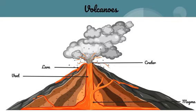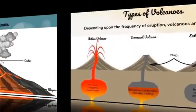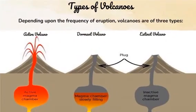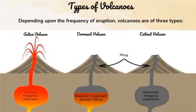Depending upon the frequency of eruption, there are three types of volcanoes: active volcanoes, dormant volcanoes and extinct volcanoes.